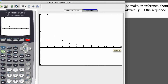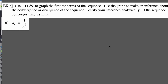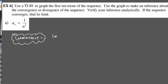Looking at that sketch, the graph looks like it's approaching a particular number — in this case zero. It doesn't look like it dips below the x-axis, but it does look like it's converging to zero. So graphically, our sequence looks like it is going to converge to zero. That's the first way to analyze things: graphically, it looks like it will converge to zero.